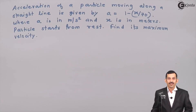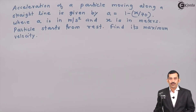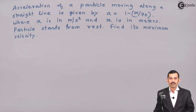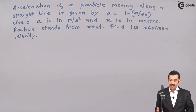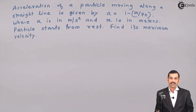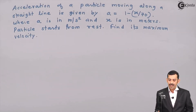Hi friends. We will solve a problem on motion with variable acceleration. The acceleration of a particle moving along a straight line is given by a = 1 - x/70, where a is in meters per second squared and x is in meters. The particle starts from rest. Find its maximum velocity.